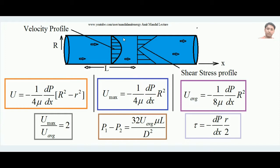As we move away from the inner peripheral surface toward the center of the pipe, the effect of friction diminishes, so the velocity in the x-direction increases. At the center, velocity is maximum; at the inner peripheral surface, velocity is zero. This produces a parabolic velocity profile.